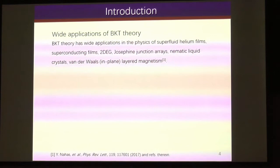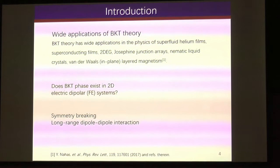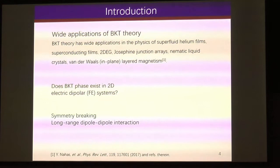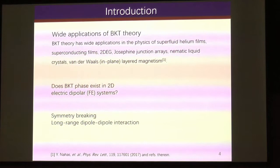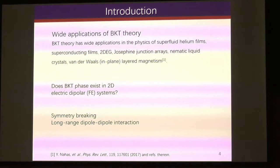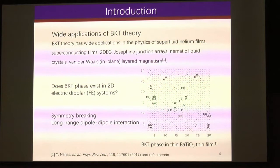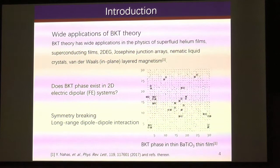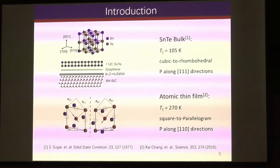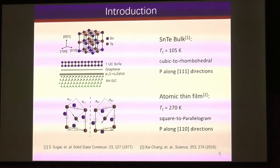As most of our community works on ferroelectricity, we want to know: does the BKT phase exist in electric dipolar systems, especially for the 2D case? There are two major problems. The first is symmetry breaking — BKT requires continuous symmetry, but ferroelectric systems have spontaneous symmetry breaking. Also, the long-range dipole-dipole interaction that prefers a long-range ordered state is destructive to the BKT phase. But very recently, it was predicted that in very thin barium titanate thin films there is something like the BKT phase. So we want to move forward to look at real 2D materials.